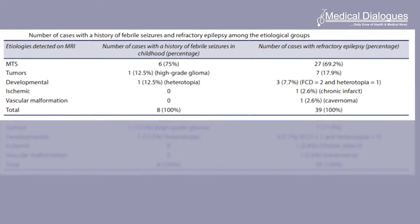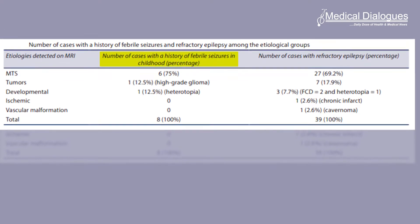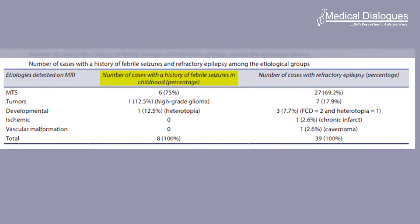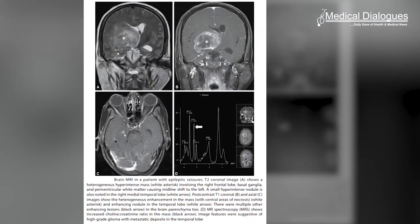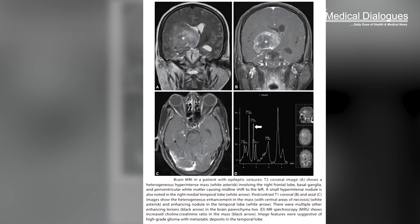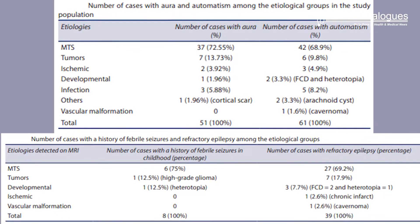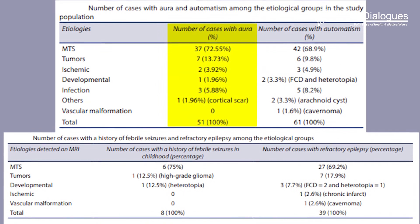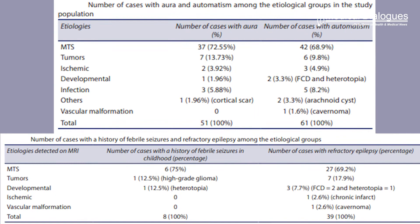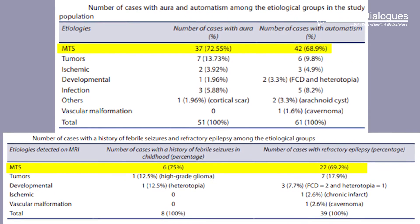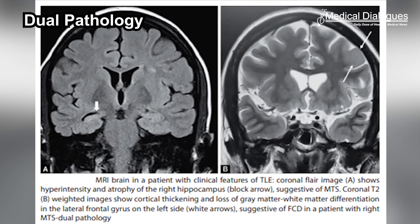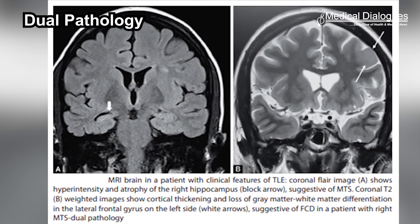The presence of automatism as well as a history of childhood febrile seizures did not have a significant association with any specific etiological finding on an MRI scan. The presence of dual pathology on an MRI was associated with drug-refractory epilepsy. The researchers concluded that the presence of aura and drug-refractory epilepsy together point towards mesial temporal sclerosis, and dual pathology on an MRI may be a risk factor for drug-refractory epilepsy.